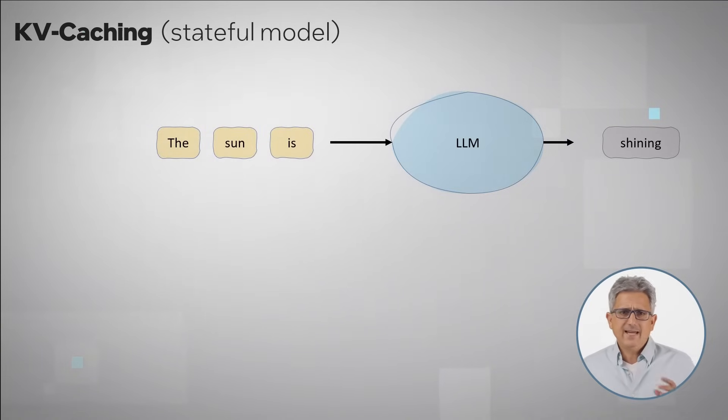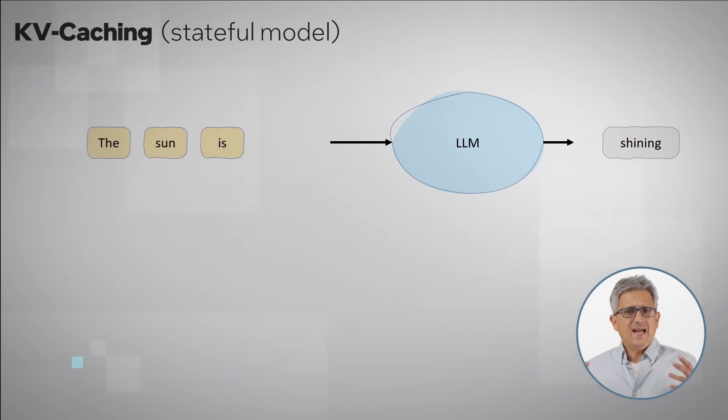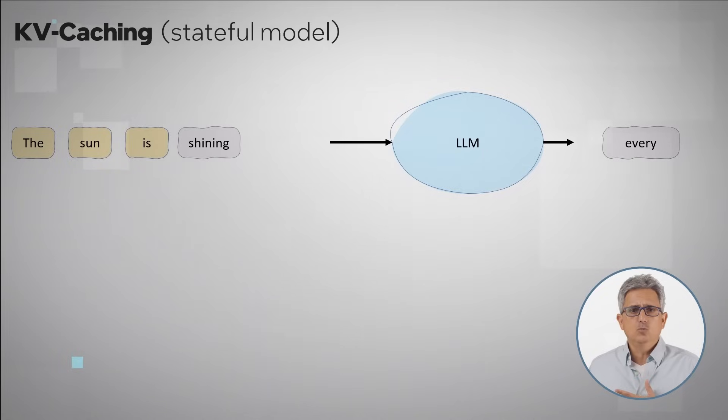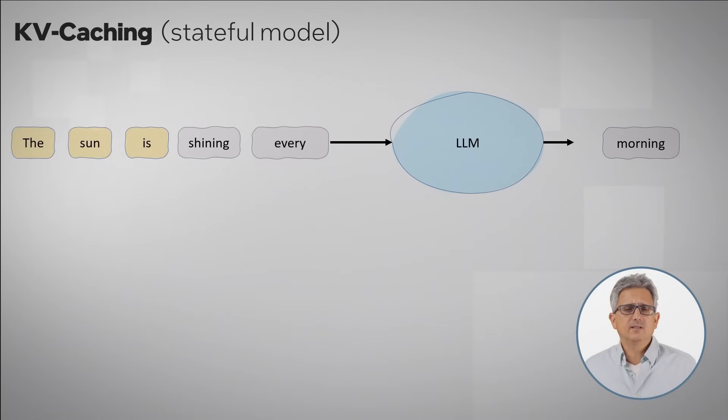A typical LLM is trained to generate the next token or the next word in the sentence. When it outputs a new word, it basically concatenates it to the original prompt and uses a prompt plus the new word as an input to the next iteration and so on. So in this example, the words the sun is will be calculated again and again. Definitely a redundant operation.